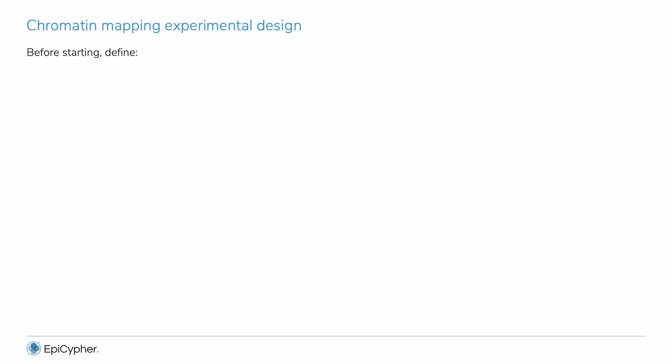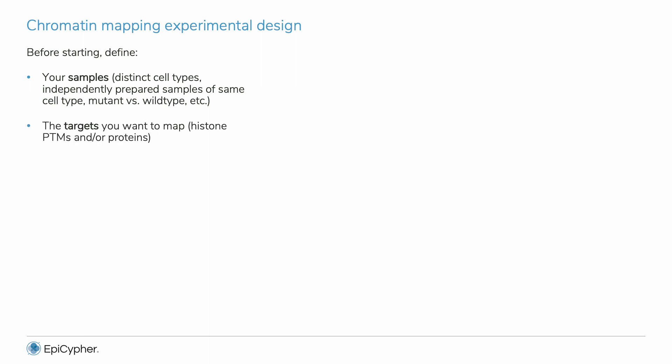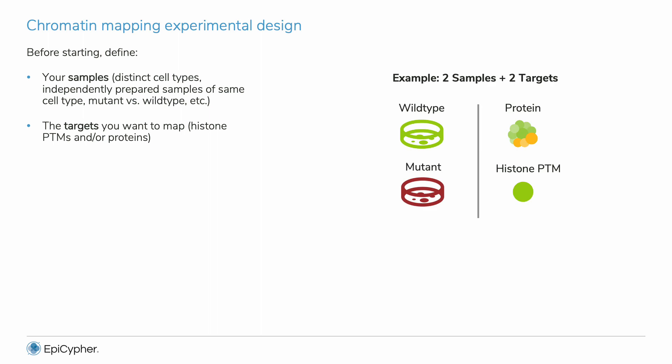Let's delve into an actual chromatin mapping experiment. Before starting, you have to collect some information. First, what are your samples? These are the cells or tissues you want to use for mapping. Second, you have to select the targets you want to map. This refers to the histone PTM or protein you want to map in your cells. In my example, I have two samples — wild type and mutant — and I want to map two targets in each of them.